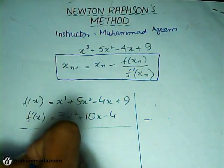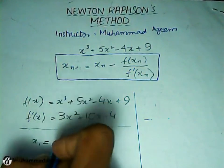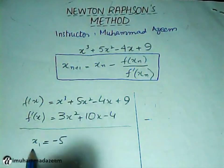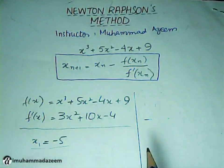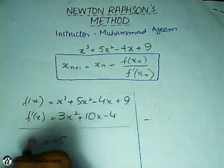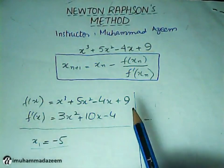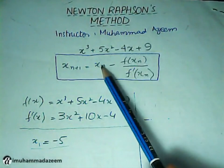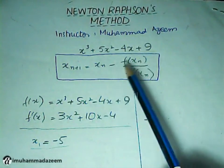Now it's time for our initial guess. Initial guess can be any number. I'm using minus 5. So this number is going to be put in the equation above, that is the Newton Raphson's method equation.